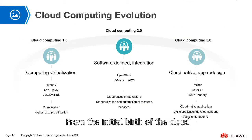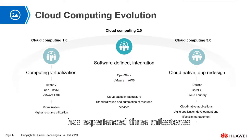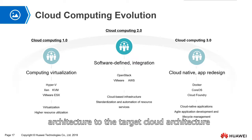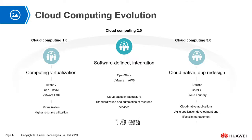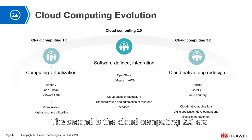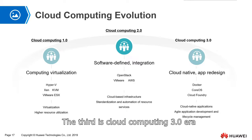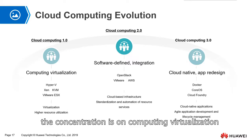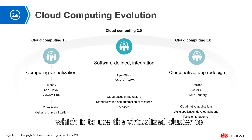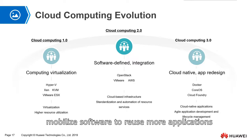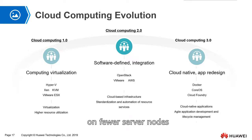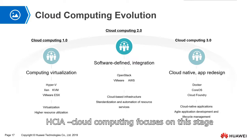From the initial birth of the cloud computing concept to today, enterprise IT architecture has experienced three milestones in development, moving from the traditional cost architecture toward the target cloud architecture. The first is the cloud computing 1.0 era, the second is cloud computing 2.0, and the third is cloud computing 3.0. In cloud computing 1.0, the focus is on computing virtualization — using virtualized clusters to run more applications on fewer server nodes, thus improving resource utilization.